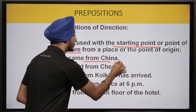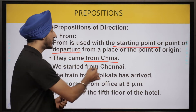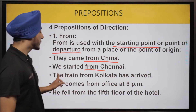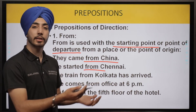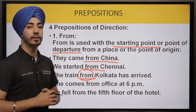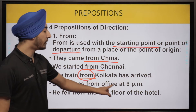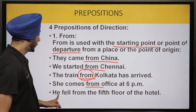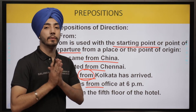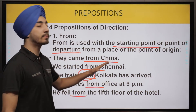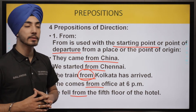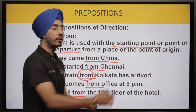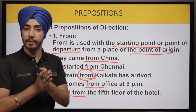Examples: 'They came from China' — telling us where they originated. 'The train from Kolkata has arrived' — the train started from Kolkata. 'She comes from office at 6 pm' — she returns from office at six. 'He fell from the fifth floor of the hotel' — he fell from the fifth floor. So 'from' is used for the starting point, departure, or point of origin.